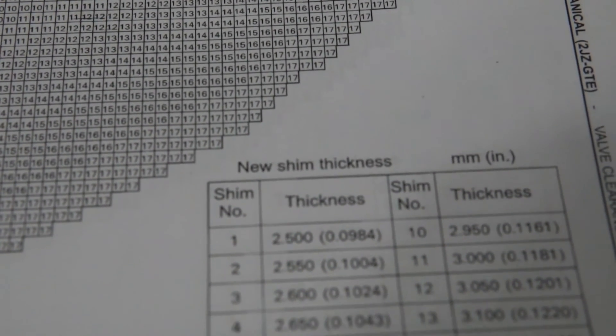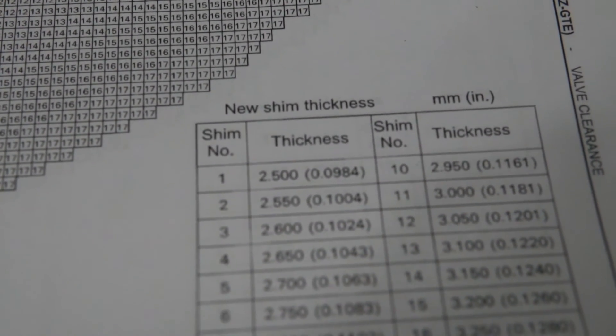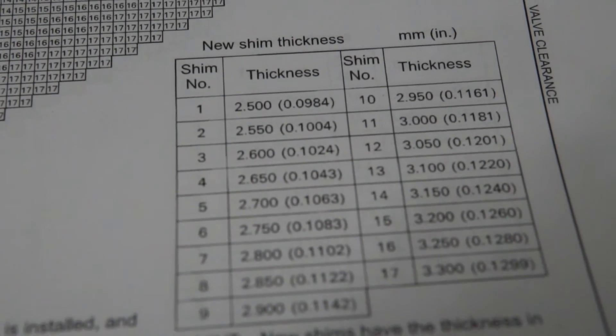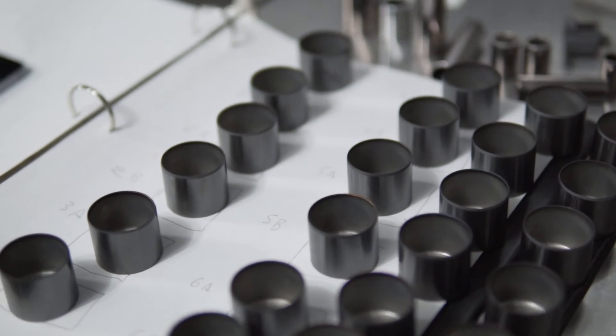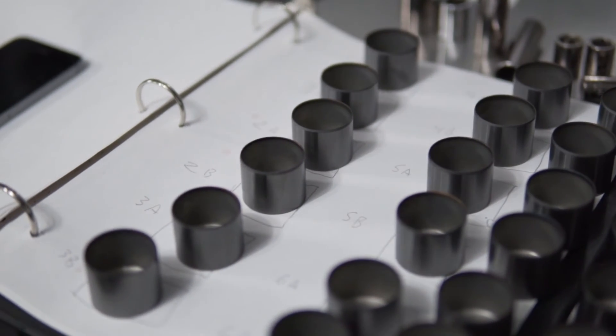Shims are sold in fixed increments, so if you're in between sizes, pick one that gets you closest to the recommended clearance spec. Repeat this process for all locations that were out of spec and purchase new shims for these locations.